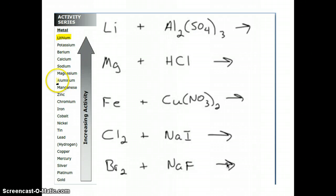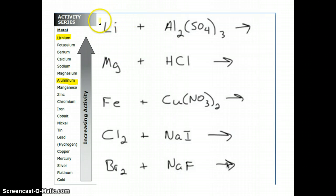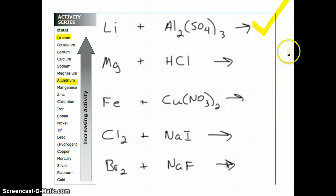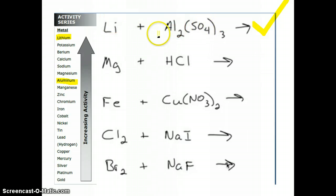Then you have aluminum down here in the activity series. The rule is: if the metal that is by itself is more active than the metal it would be replacing, then this reaction will happen. So yes, this reaction would happen — lithium would come in and replace aluminum, making lithium sulfate and aluminum.